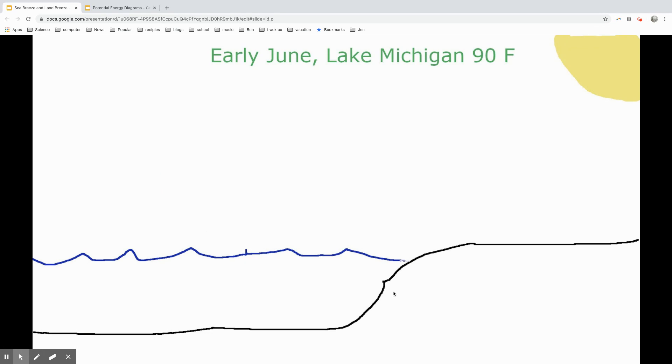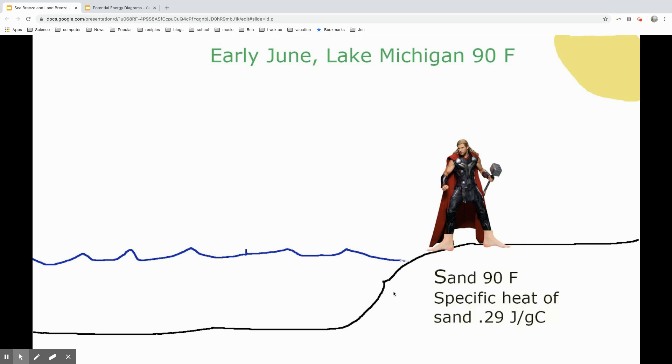When you go to Lake Michigan in early June on a day when it's 90 degrees outside, it's blazing hot, and you're with your friend Thor, as you walk out on the beach you're going to notice something.